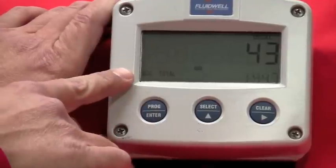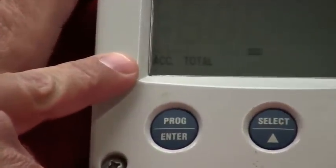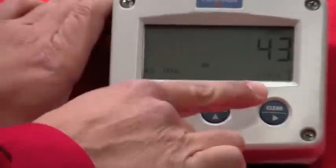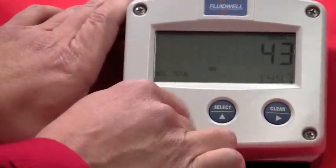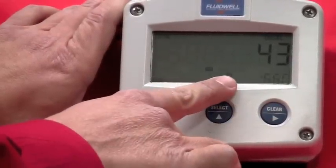If I push it just once, you'll see the accumulated grand total. This is a non-resettable totalizer, so that's the most basic function of your select button here. If I push it again, it goes back to flow rate.